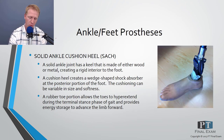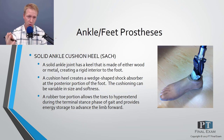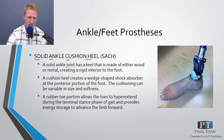From the Symes amputation level upward — including transtibial, transfemoral, and hip disarticulation — all require some sort of foot prosthesis. The most common is the solid ankle cushion heel foot, or SACH foot. It has a solid keel made of lightweight material creating a rigid interior, springy toe mechanisms for energy storage, and a cushioned heel at the back for shock absorption.